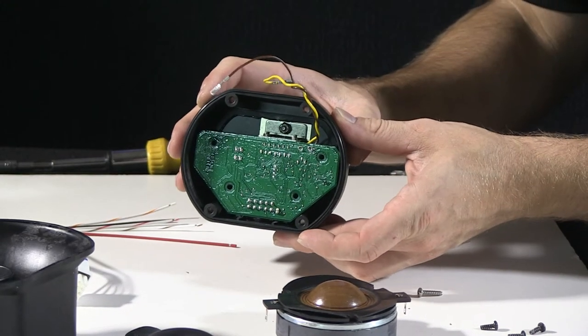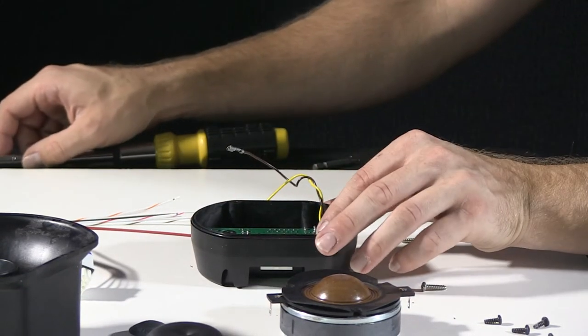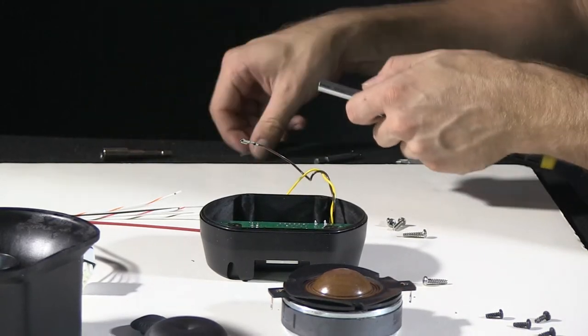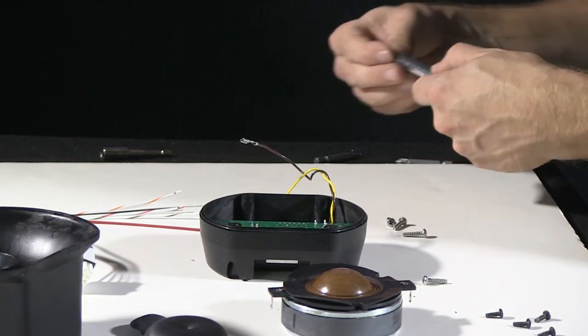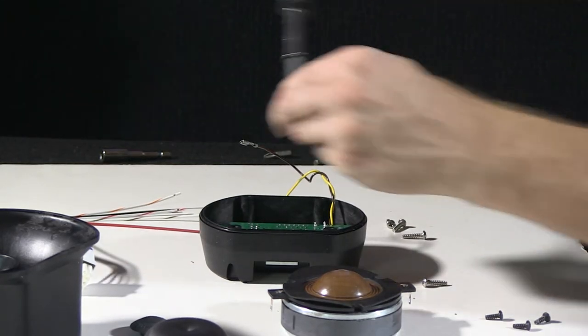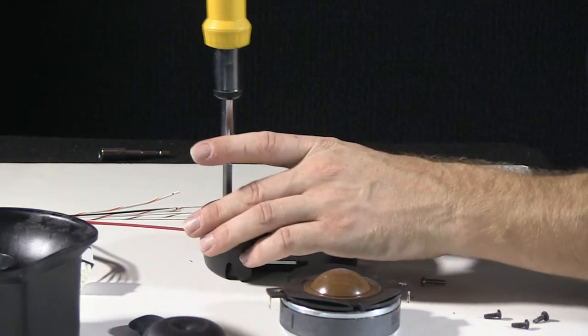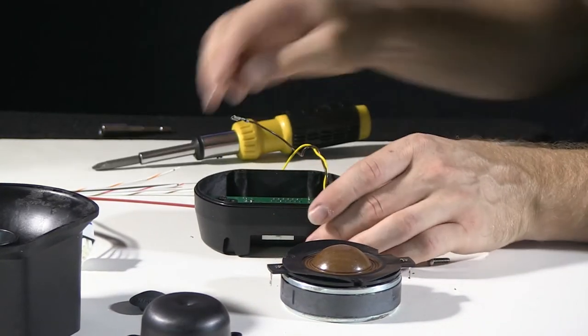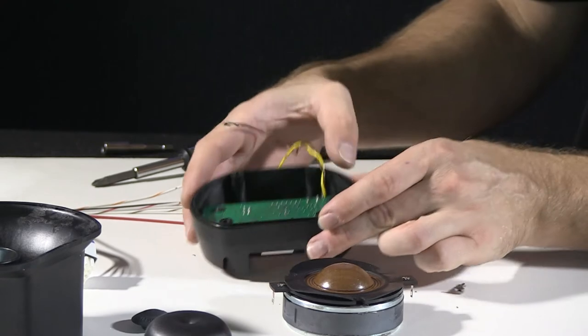So with the nut tighten back down, go ahead, reinstall the four black mounting screws onto the board assembly. Four screws tighten down again.